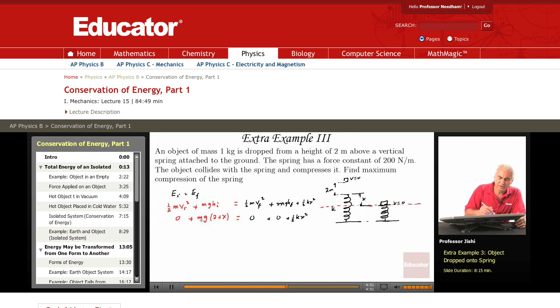So we have MG times (2 plus x). M is 1, and G is 9.8. So that's 9.8 into (2 plus x), where x is in meters.